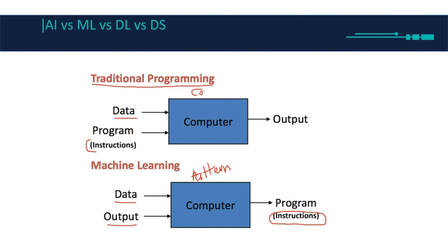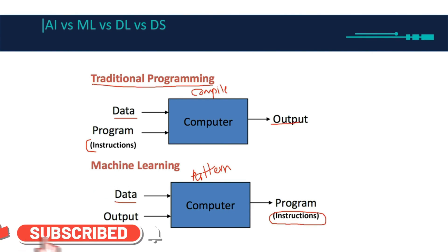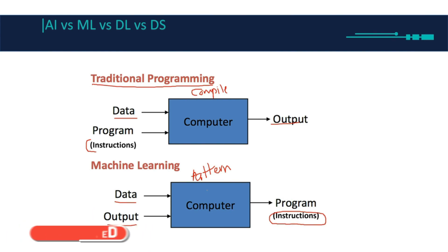In traditional programming, the computer compiles the instructions and gives me the output. But in machine learning, I'm the one giving the data, and instead of writing the instructions, I give the output. From that output and the data, machine learning finds a pattern and gives me the instructions. Let's go to the next slide to see how.